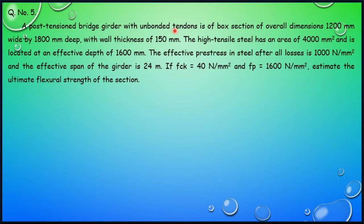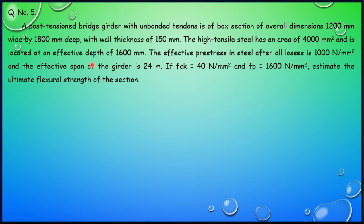Moving to Question Number 5. A post-tensioned bridge girder with unbonded tendons is of box section with overall dimensions of 1200 mm wide and 1800 mm deep, with a wall thickness of 150 mm. High-tensioned steel has an area of 4000 mm² located at an effective depth of 1600 mm. The effective pre-stress after all losses is 1000 N/mm², the effective span is 24 meters, FCK is 40 N/mm², and FPE is 1600 N/mm². Estimate the ultimate flexural strength of the section.